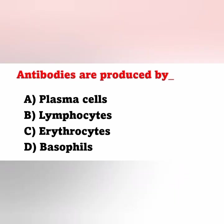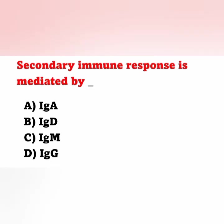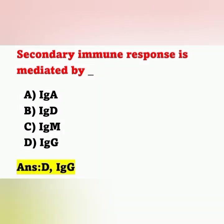Next question: antibodies are produced by — Option A: plasma cells. Option B: lymphocytes. Option A, plasma cells, is the correct answer. Next question: secondary immune response is mediated by — Option A: IgA. Option B: IgD. Option C: IgM. Option D: IgG. Secondary immune response is mediated by IgG, which is the most common immunoglobulin and can cross the placenta. Option D is the correct answer.